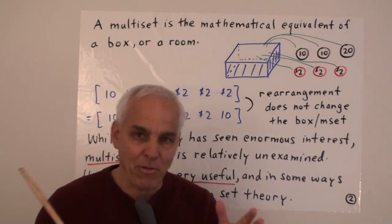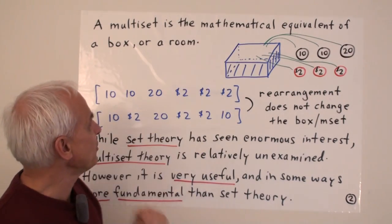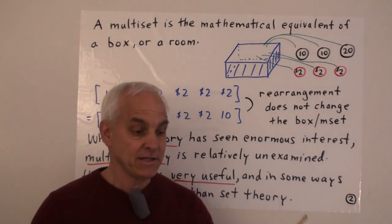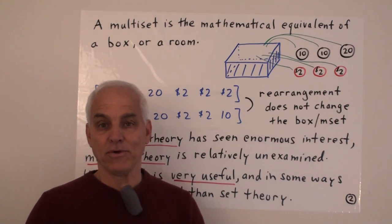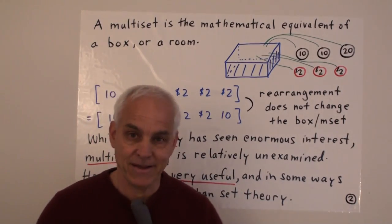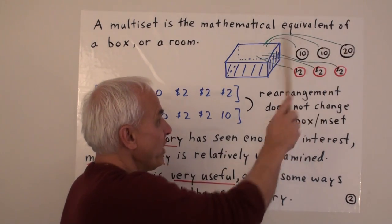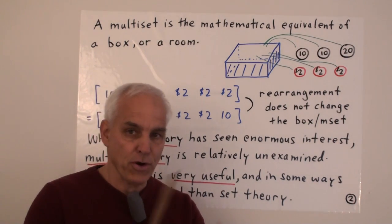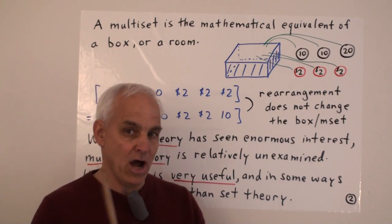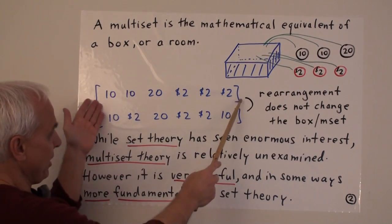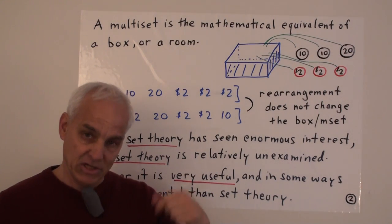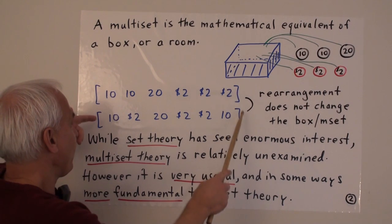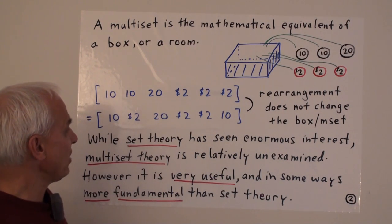A multiset is a very simple-minded way of organizing mathematical objects. It's sort of the mathematical equivalent of a box, or perhaps a room. We can use that box to organize things by just putting things inside the box. For example, we might put some money inside our box. Maybe two 10-cent pieces, a 20-cent piece, and three $2 coins. We can shake that box around. The order of the elements changes, but the essential content of the box is unchanged.